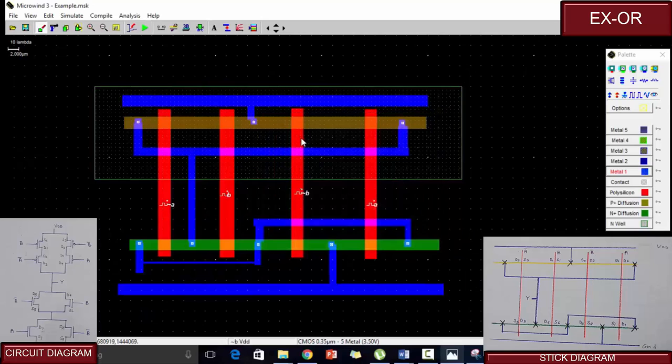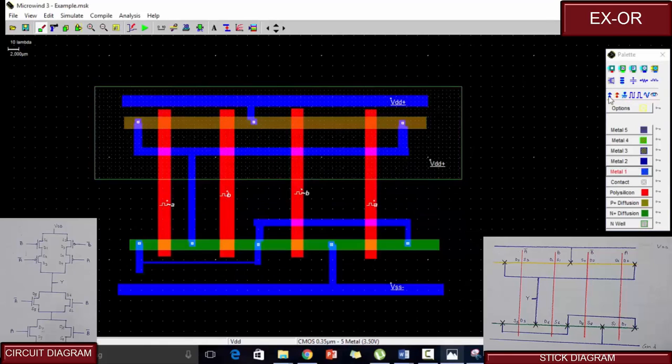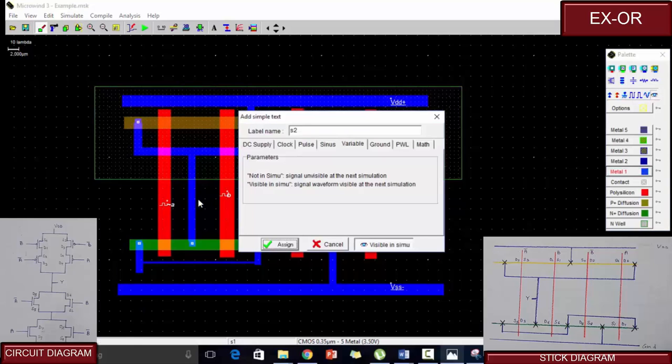Now let us assign VCC and ground to the metals. VCC and ground. VCC is also given in the N well. And for the output, we use the output signal. Label name would be Y. Assign.